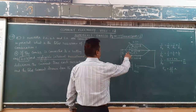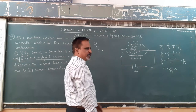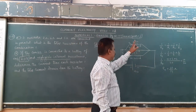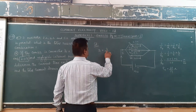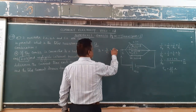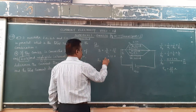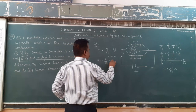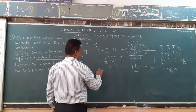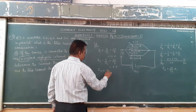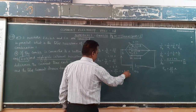Now, how do I get I1? Just apply Ohm's law. The potential difference is 20 volt and the resistance is 2 ohms. So I1 = V/R1 = 20/2 = 10 ampere. I2 = V/R2 = 20/4 = 5 ampere. I3 = V/R3 = 20/5 = 4 ampere.